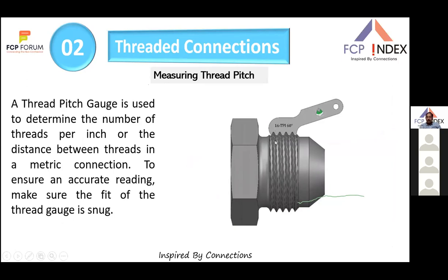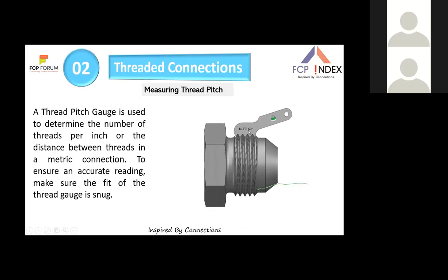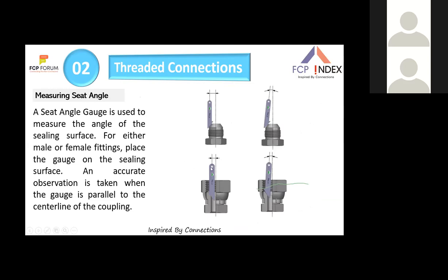A pitch gauge is used to determine the number of threads per inch (TPI) or pitch in millimeters for metric threads. A seating angle gauge is also used to measure the thread seat angle — if the gauge fits correctly, you have the right match. This allows you to measure the seat angle and confirm the thread type.